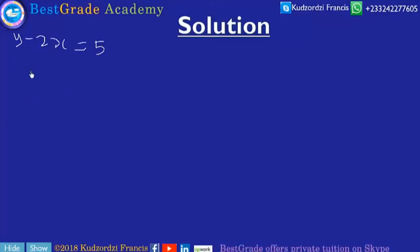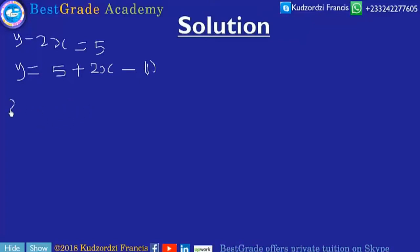We can make Y the subject from the first equation, so we have Y equal to 5 plus 2X. Let's call this equation 1. The second equation is X squared plus 4Y equals 5. Let's call this equation 2.